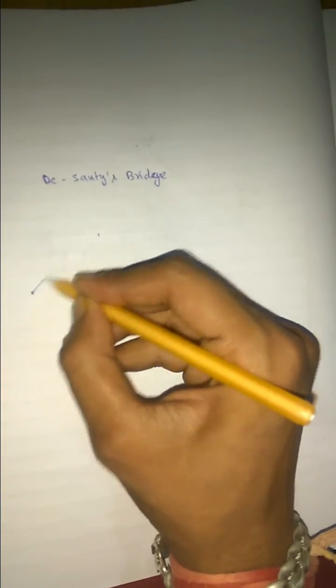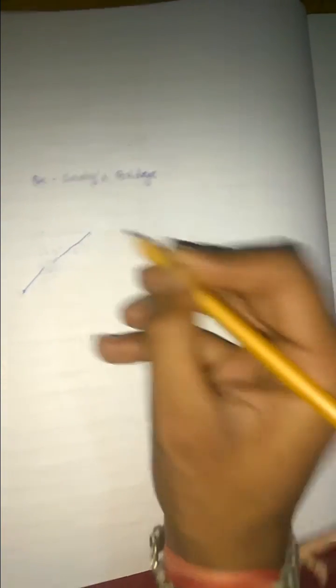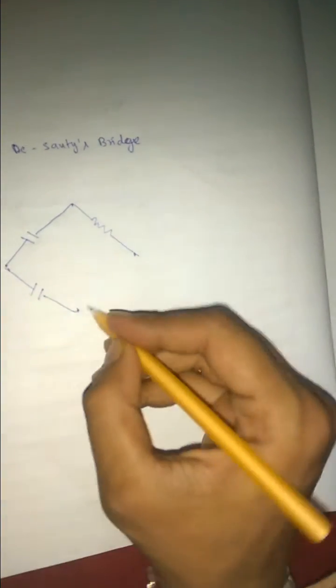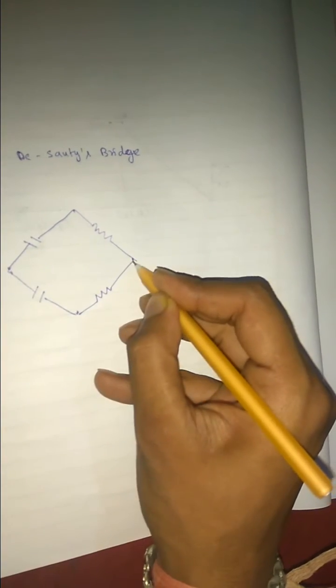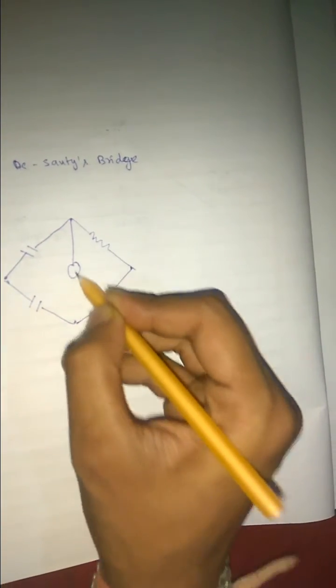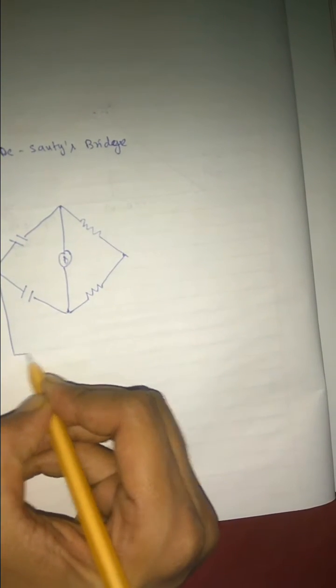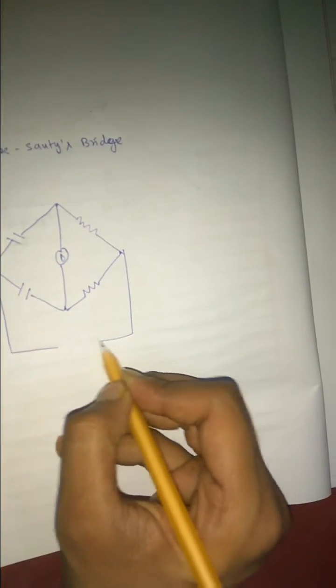Draw 4 points. Here is a capacitor. Here is a capacitor. Here is a resistance. Here is a resistance. The galvanometer or deflector is present in between. This is our supply.